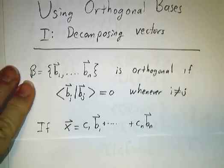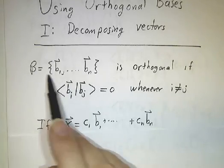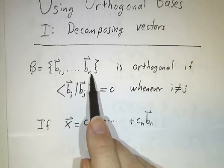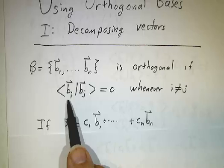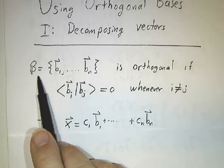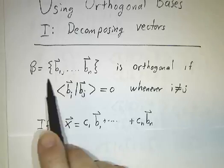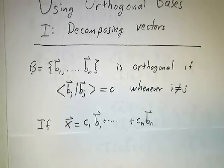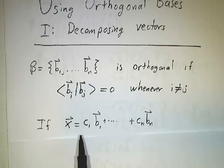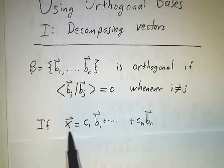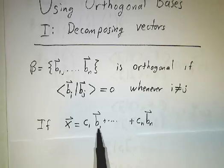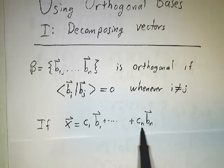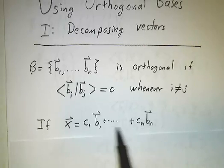Now we're going to look at an orthogonal basis. Suppose we have an n-dimensional vector space with some inner product — it doesn't have to be the standard inner product — and we have a basis that consists of orthogonal vectors. The wonderful thing about inner products is that it allows us to decompose a vector in the basis. If I give you any vector in the vector space, you're going to want to write it as some constant times the first basis vector, plus some constant times the n-th basis vector, and all the terms in between.